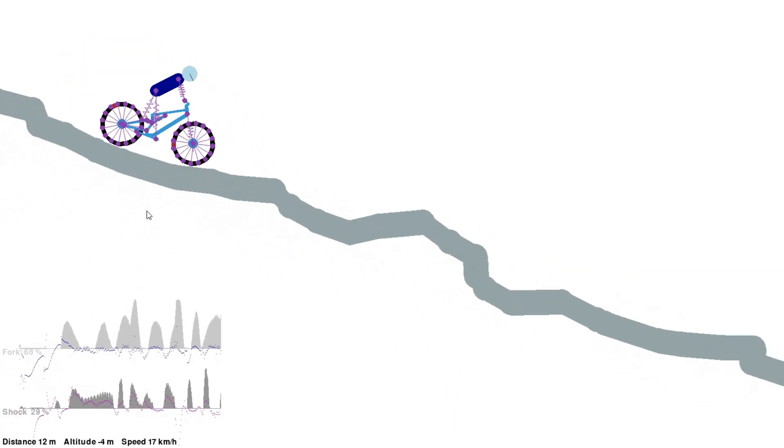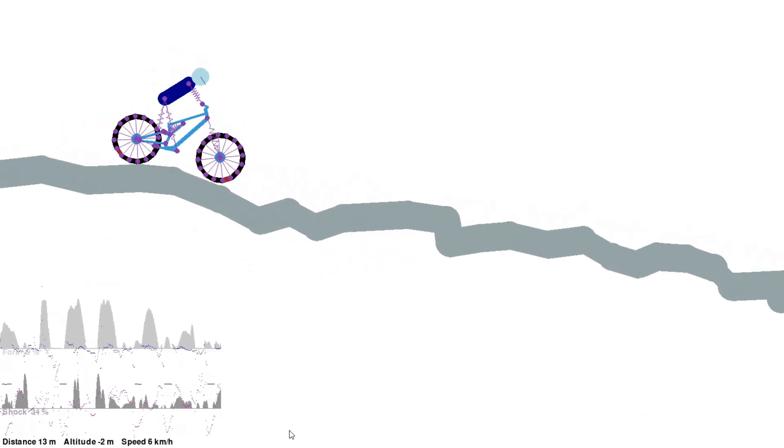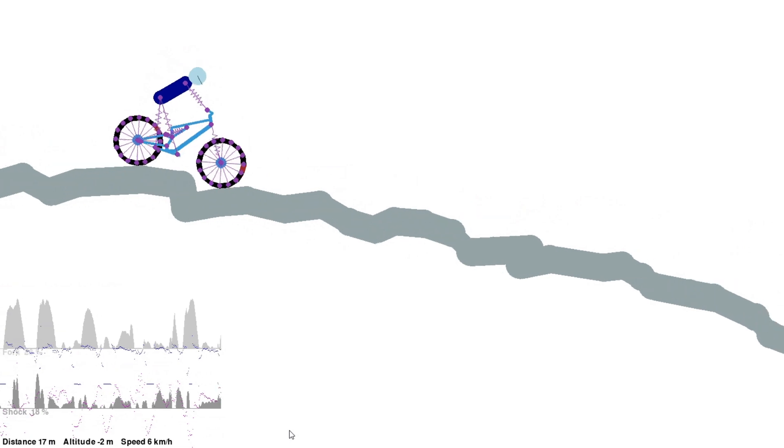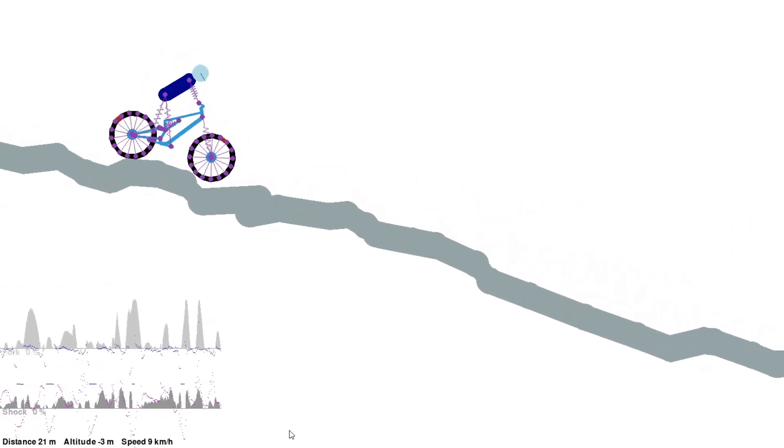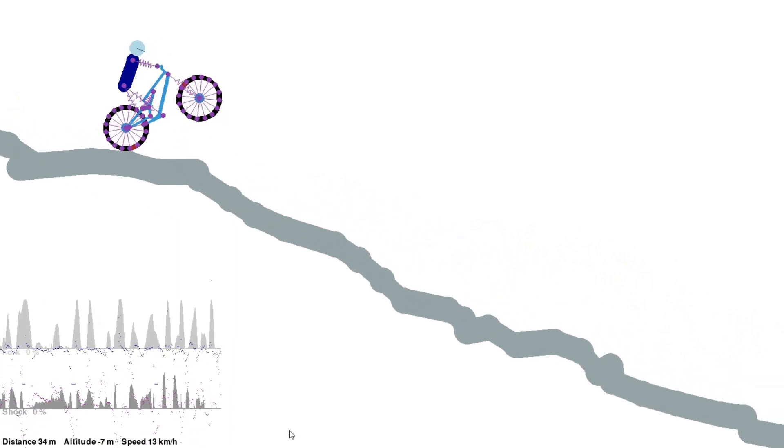You can see it makes all the difference in getting over obstacles. You may have noticed that in the bottom left corner of the screen, I plot the fork and shock compression. So I'm fairly certain that these are set up reasonably.